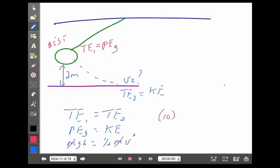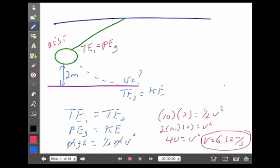So, I have gravity is 10, a height of 2. Multiply through by 2. 40 is v squared, or v is 6.32 meters per second. That's really all there is to it. Not too difficult.